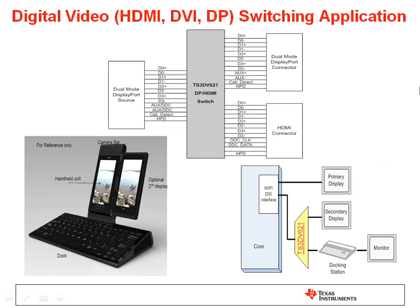Digital video interfaces use differential signaling. These require specialized switches like the TS-3-DV621 to properly route these signals with minimum degradation. These digital video switches are used to support an external DisplayPort, an external HDMI connector, or a docking station.